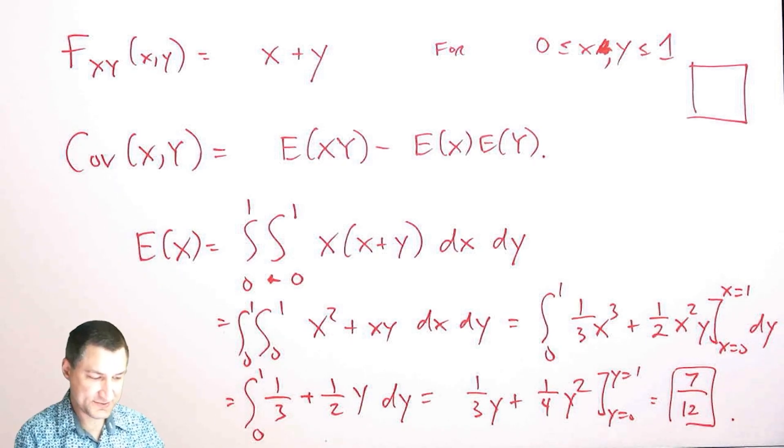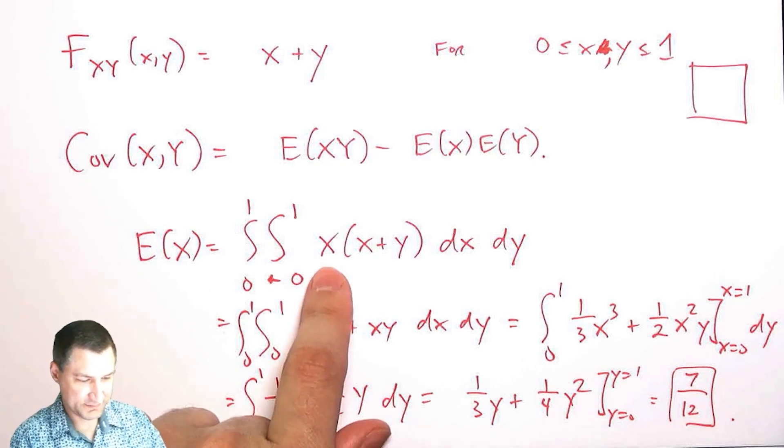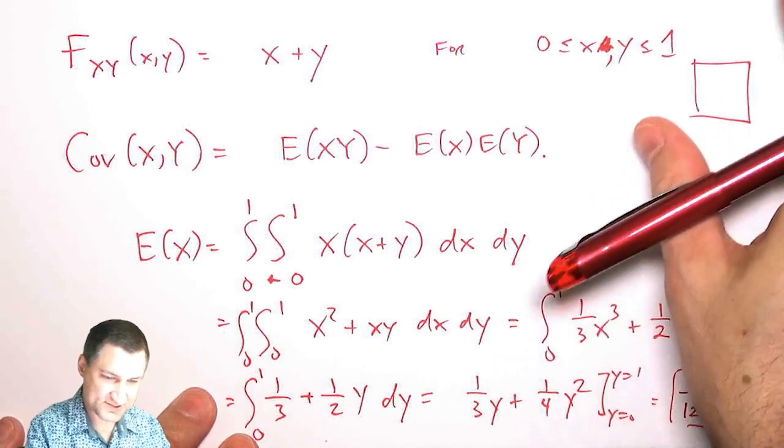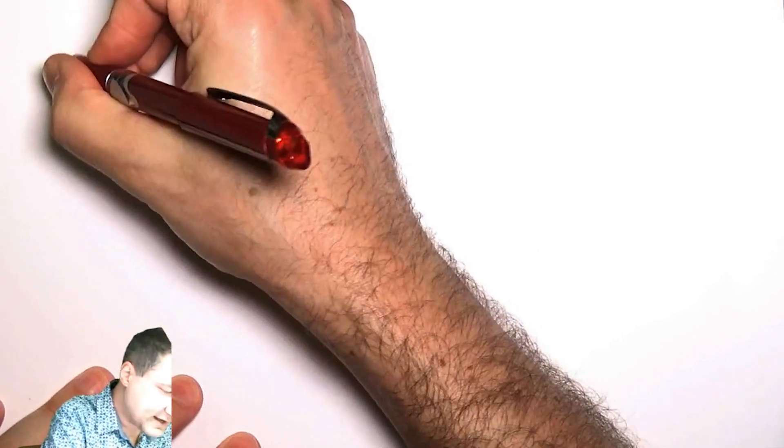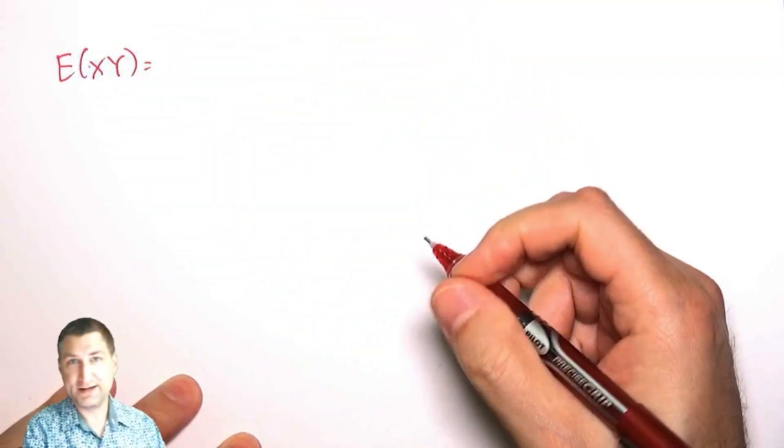By symmetry, expected value of Y is going to be the same, because flipping this with Y here is going to give me basically the same integration process. So now I have to compute what is the expected value of X, Y.